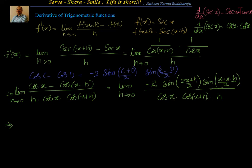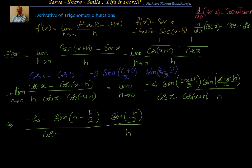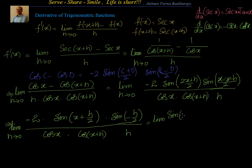We will simplify this further. I will have minus 2 into sin of (x plus h/2), the x's cancel, sin of (minus h/2), divided by h. I have cos of x, and also cos of x plus h. This whole thing has limit as h tends to 0. Now we will separate them. We write it as limit of sin of (x plus h/2) divided by cos of x plus h, as h tends to 0.